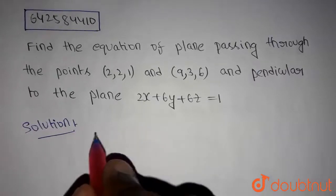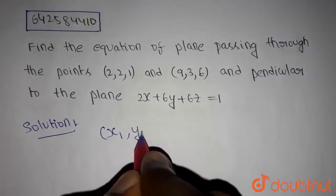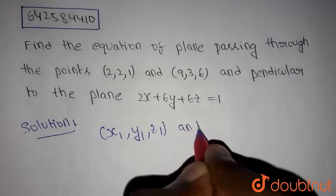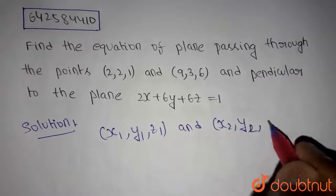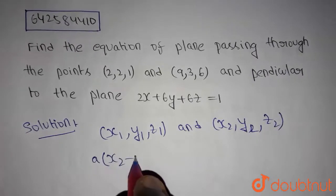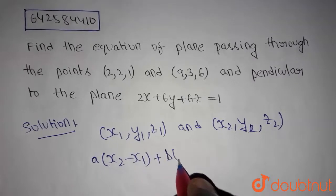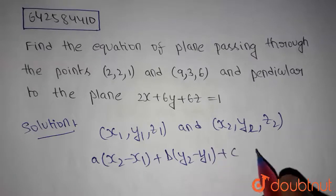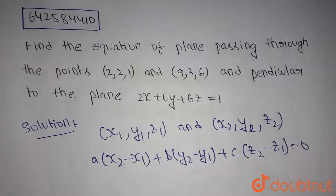The equation of a plane passing through two points (x1, y1, z1) and (x2, y2, z2) is given by: a(x2 − x1) + b(y2 − y1) + c(z2 − z1) = 0.